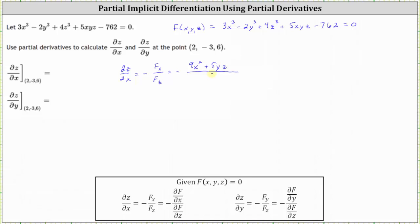For the denominator, we differentiate F with respect to z, treating both x and y as constants. The derivative of three x cubed with respect to z is zero, the derivative of two y cubed with respect to z is also zero, and the derivative of four z cubed with respect to z is twelve z squared. The derivative of five xyz with respect to z is five xy, and the derivative of 762 with respect to z is zero.